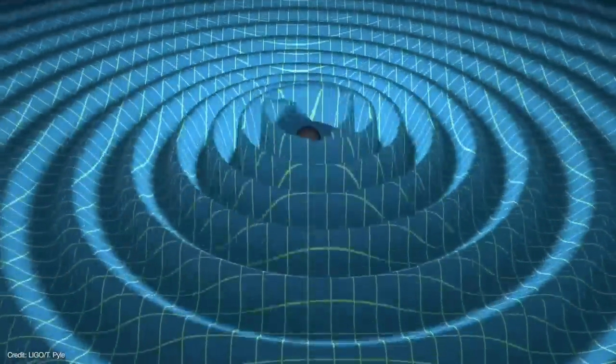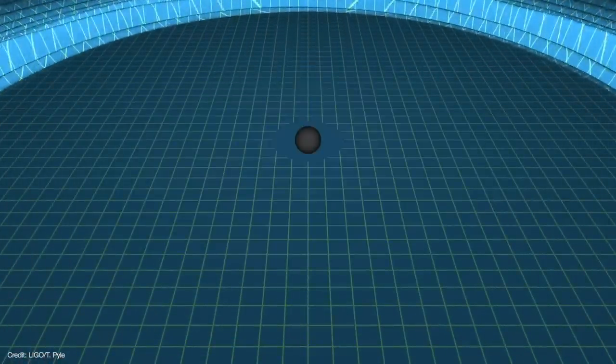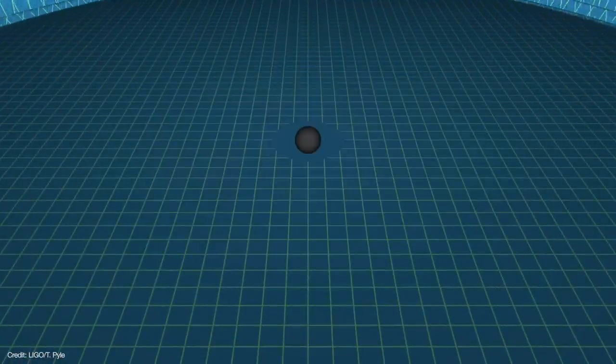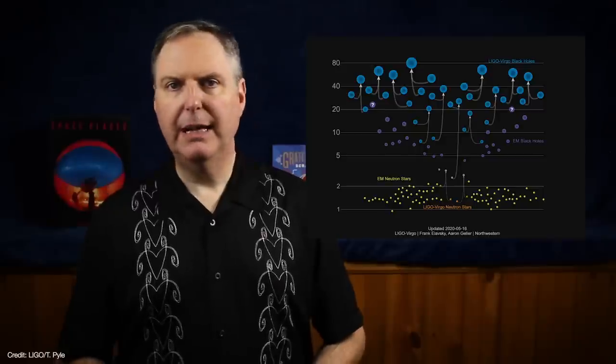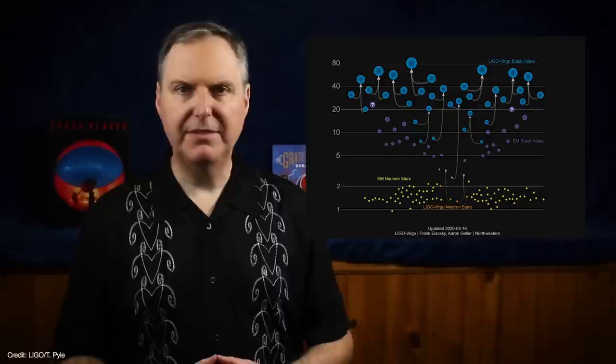After this ring-down period, the merged black hole stops vibrating, and the gravitational waves dissipate. Since 2015, the LIGO-Virgo collaborations have detected 12 binary black hole mergers from their gravitational waves.